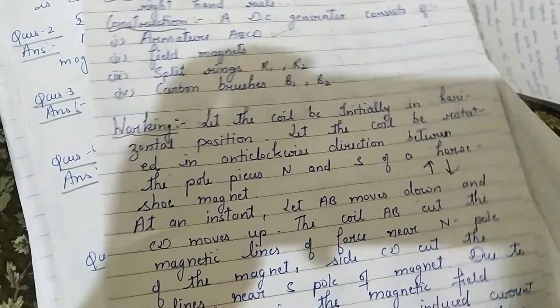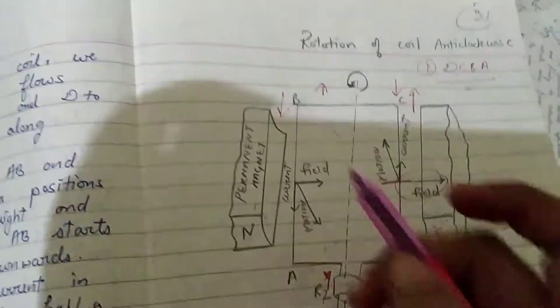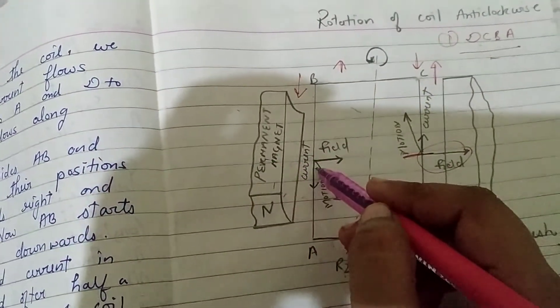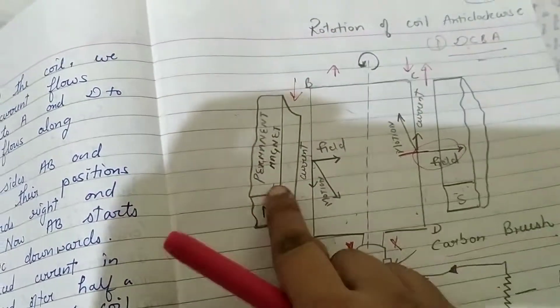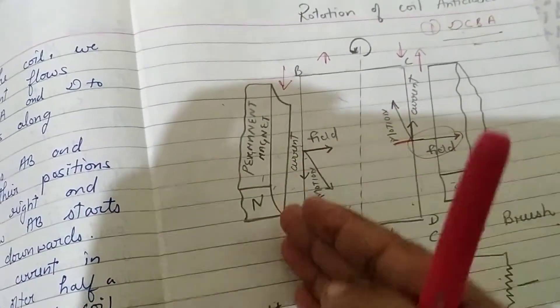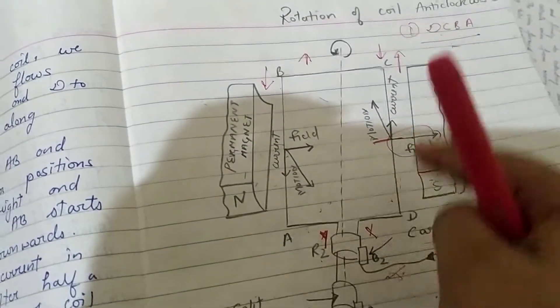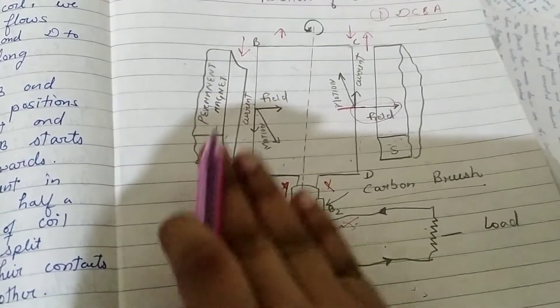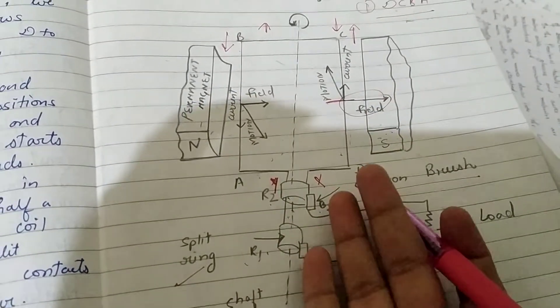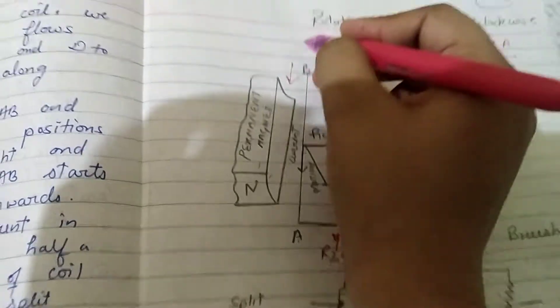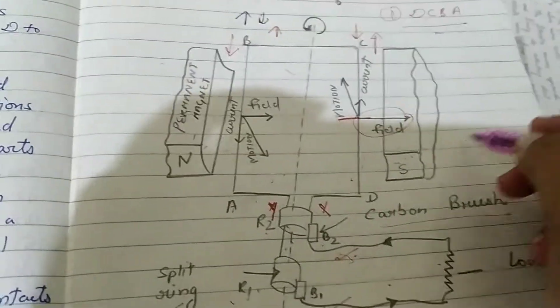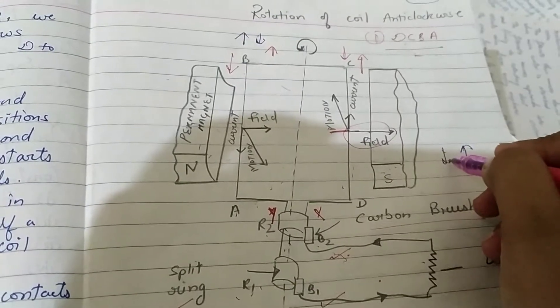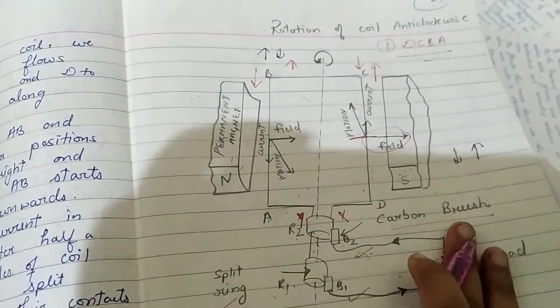AB will cut the magnetic lines of the north pole. Similarly, CD will cut the lines from the south side. When you move the coil, the split rings will reverse and change. So first time AB will go up and CD will go down. The second time CD will go up and AB will go down. In this way the electric generator will work.